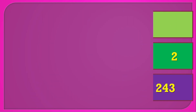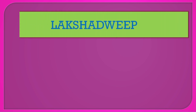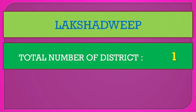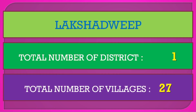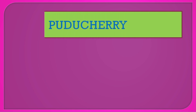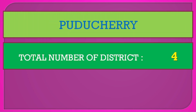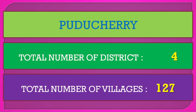Lakshadweep: total number of districts 1, total number of villages 27. Puducherry: total number of districts 4, total number of villages 127.